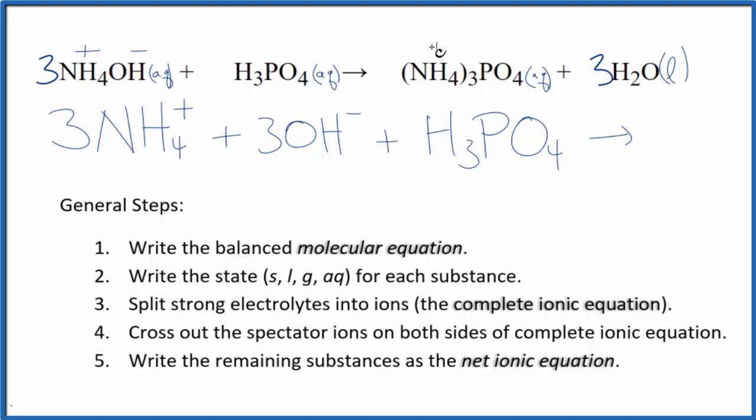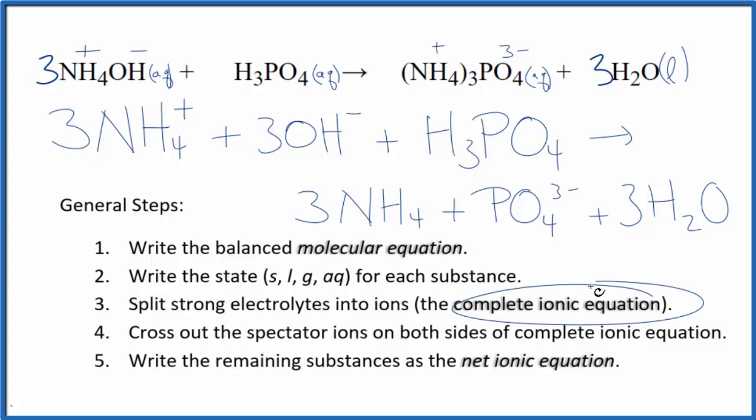We said the ammonium ion is positive and then the whole phosphate ion has a three minus charge. So we have three ammonium ions, again, just like we had in the reactants, plus we have the phosphate ion here. And then we don't split water apart, so we have three water molecules, 3H2O. These are the products. So we have our complete ionic equation.